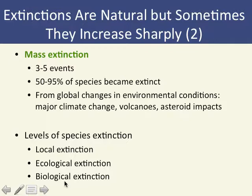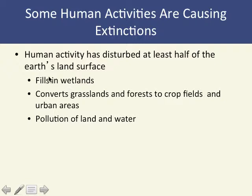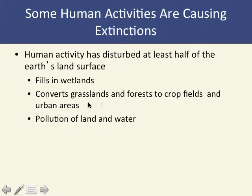Human activities driving extinction include filling in wetlands — often seen as useless land — for agriculture, converting grasslands and forests into crop fields. In Iowa, 99.99% of the natural prairies that used to exist are now gone, along with an untold number of plant and insect species that disappeared before they were even researched or known to science.